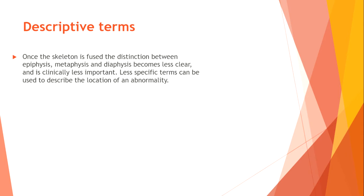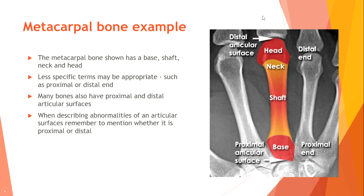Descriptive terms. Once ossification centers have fused, the distinction between epiphysis, metaphysis, and diaphysis becomes less clear and is clinically less important. Less specific terms can be used to describe the location of an abnormality: shaft, neck and head, distal articular surface, proximal articular surface, and base. For example, a metacarpal bone has a base, shaft, neck, and head. Many bones also have proximal and distal articular surfaces.